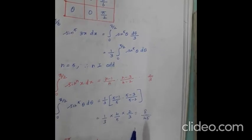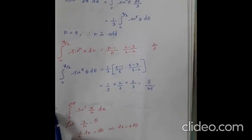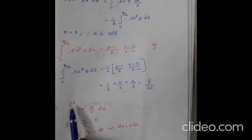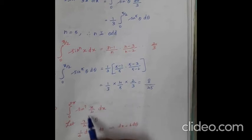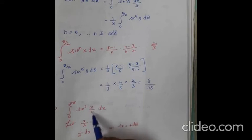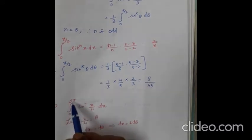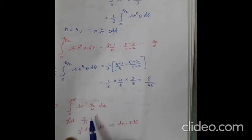These sums are asked in 2-mark questions. The sixth sum is also the same model. What is the sixth sum? Integral from 0 to 2π of sin⁷(x/4) dx. Here, instead of x we have x/4. This x/4 is taken as θ. We need the limit 0 to π/2, but the given limit is 0 to 2π, so we use the substitution method. We cannot directly apply the formula.